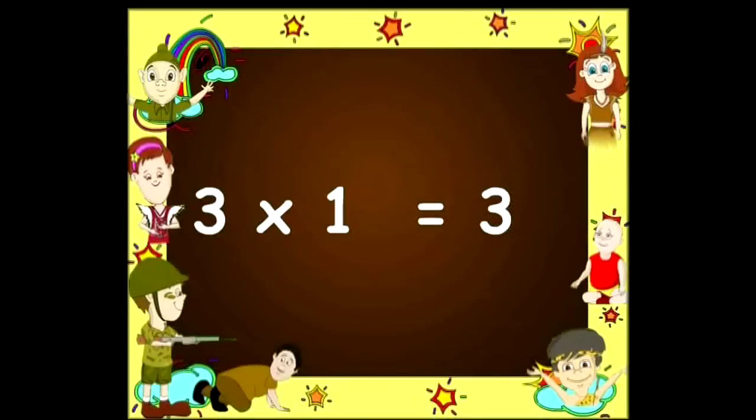Three ones are three, three twos are six, three threes are nine, and three fours are twelve.